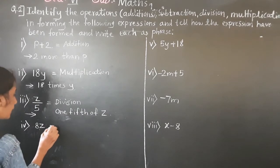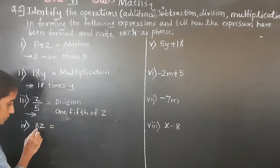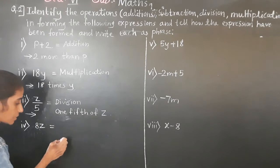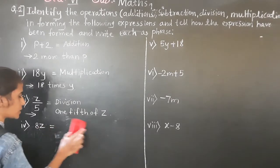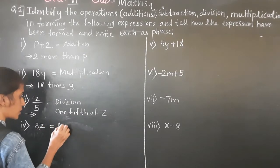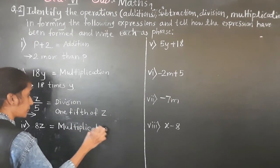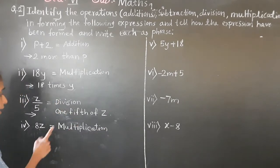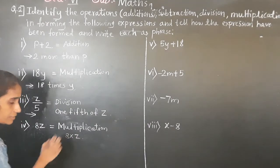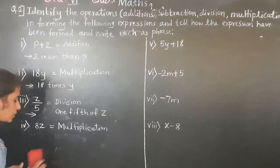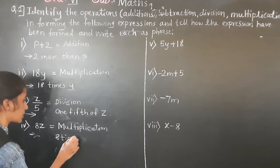8z: 8 is a constant, z is a variable, and no sign between them means multiplication — 8 multiplied by z. The operation is multiplication. The phrase is: '8 times z.'